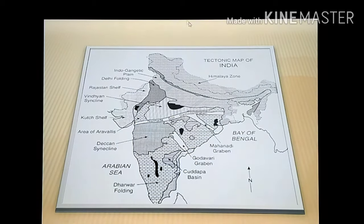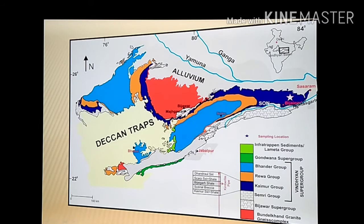This is a tectonic map of India showing the Vindhyan syncline basin where the Vindhyan rocks are deposited, and the Kadappa basin. In the more detailed map of the Vindhyan Supergroup, the red color represents the Bundelkhand Granite and gneissic complex of Archean age. The Semri Group represents the lower Vindhyan. The upper Vindhyan consists of Kaimur shown in purple, Rewa in orange, and Bhandir in blue.